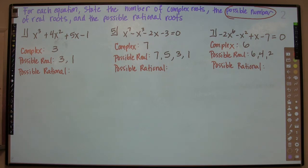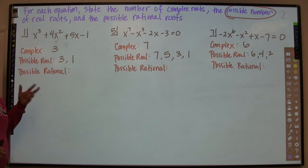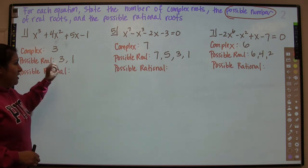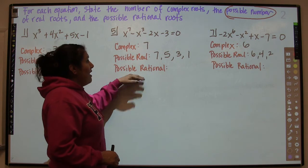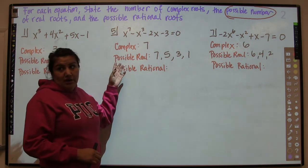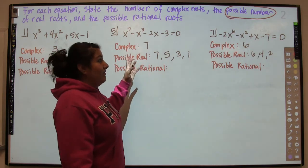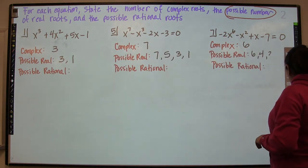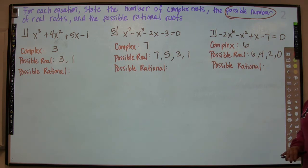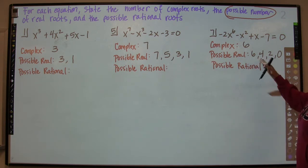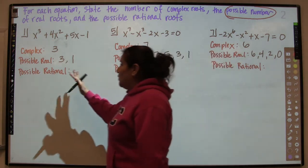There's one last thing: is it possible for number one to have zero real? If you had zero real, all three would be imaginary — but three is not even, so it's not possible to have zero real. At least one has to be real. For number five, zero real would mean seven imaginary — and seven is not even, so that's not possible either. But for number seven, zero real means six imaginary — and six is even, so that is totally possible. So for number seven: six, four, two, or none.